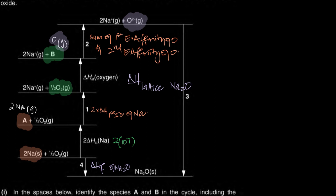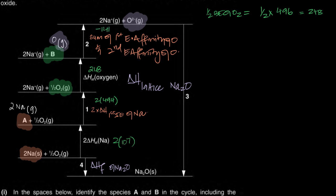From the data booklet, the bond energy of oxygen gives an atomization enthalpy of 248 kJ/mol. The first electron affinity of oxygen is given as −141 kJ/mol, and the second electron affinity is +798 kJ/mol. These are added together to give the value for arrow number two. The enthalpy of formation of Na₂O is given as −414 kJ/mol.